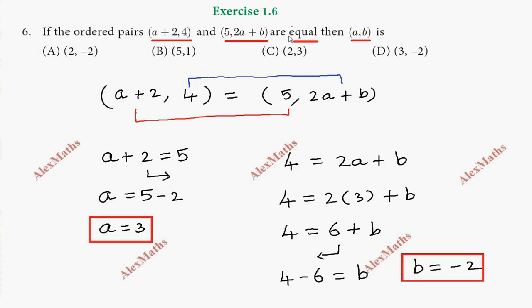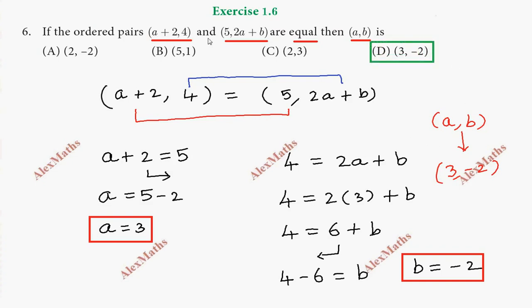We have answered: a equals 3, b equals minus 2. So the answer is (3, minus 2). The answer is Option D. So this is the ordered pair equal solved.